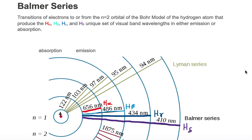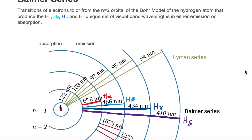Here we're looking at the idealized Bohr model of the hydrogen atom. In the center we have the nucleus which has a net positive charge. There's only one proton in the nucleus, therefore to make the atom a neutral element on the periodic table, we would need to put one negatively charged electron in one of these orbitals.